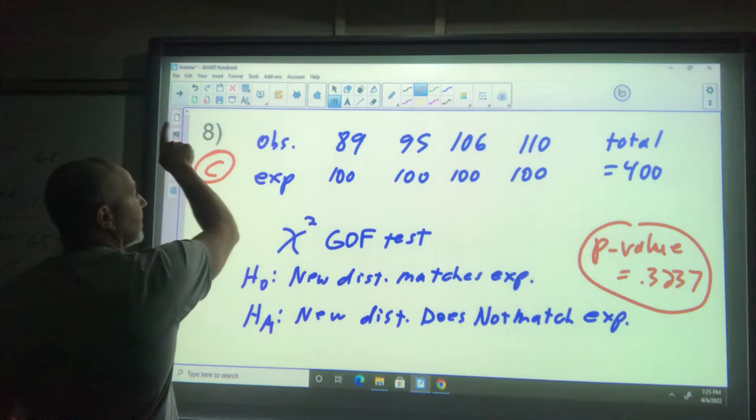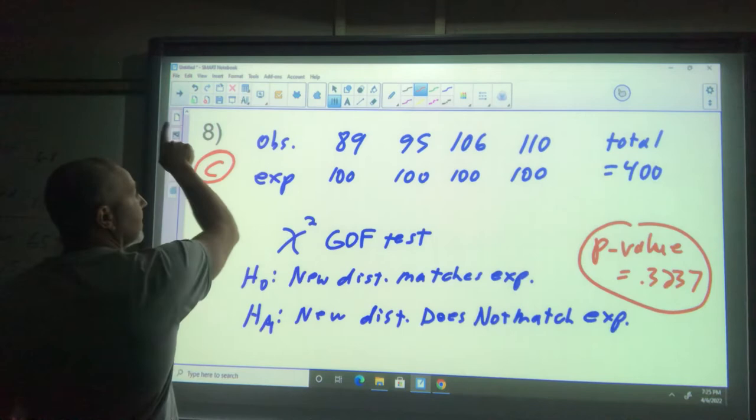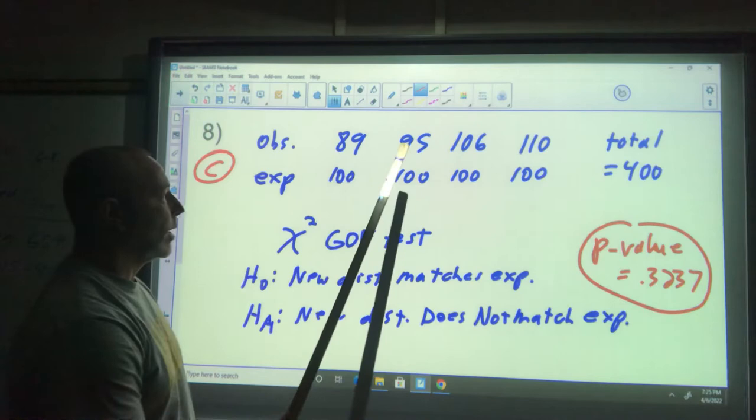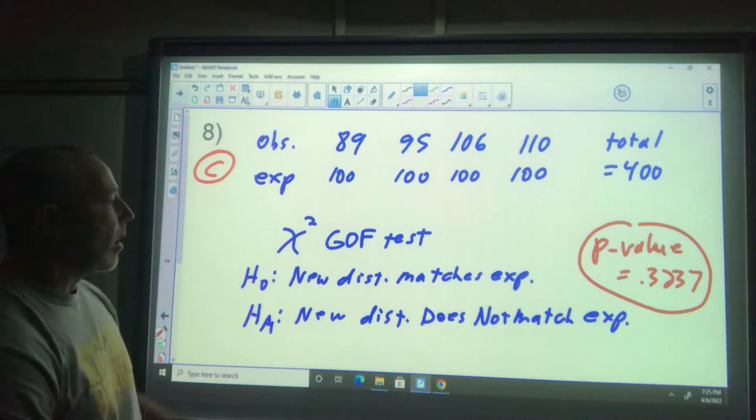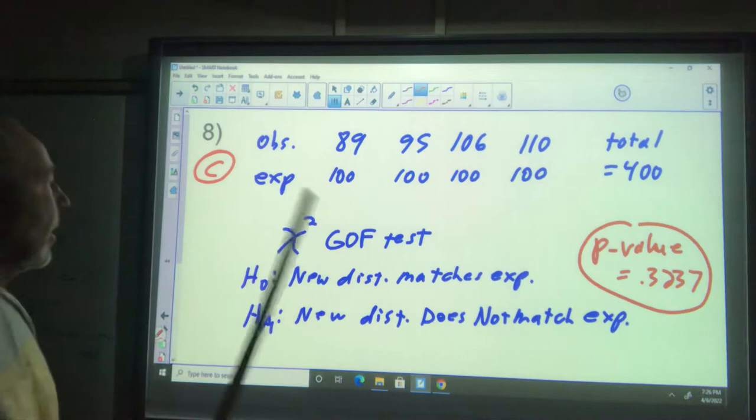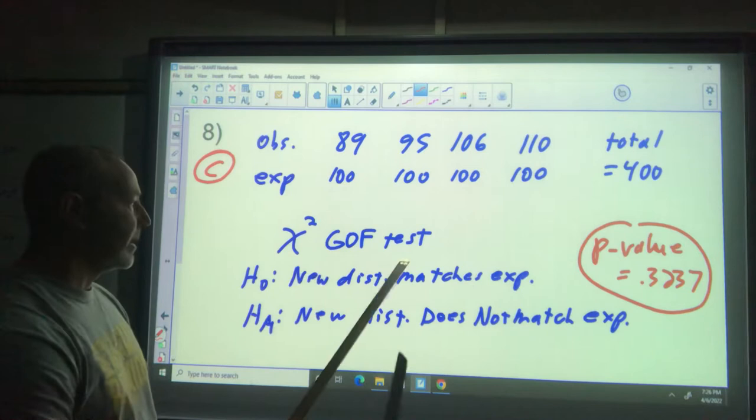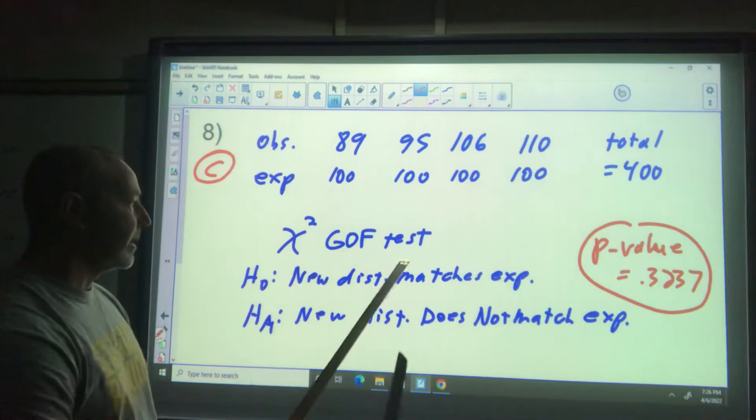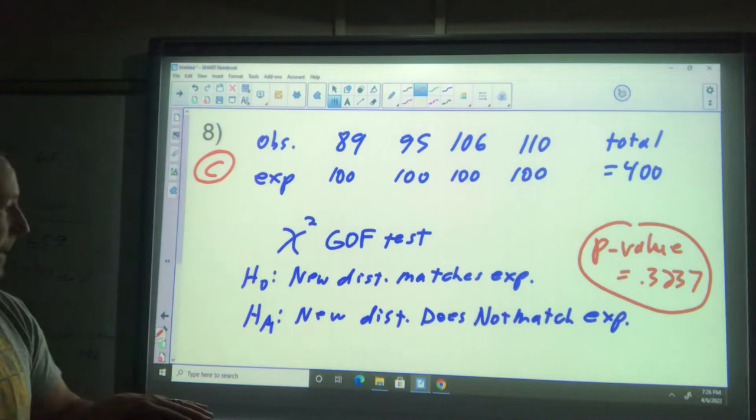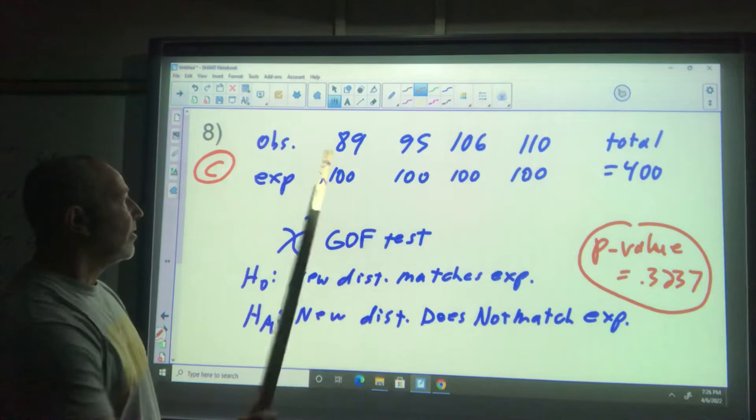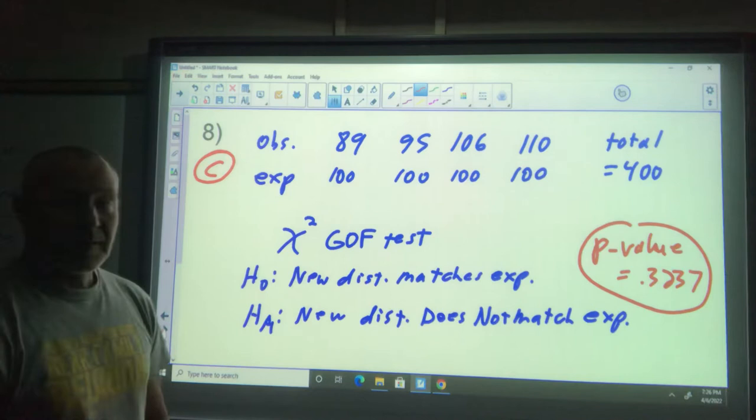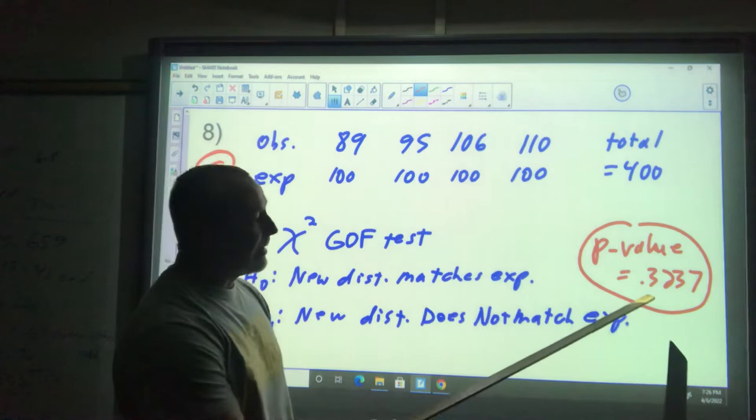Our observations are 89, 95, 106, and 110 of the different toys. We expected 100 of each toy - the total is 400. Put observed values in list one, expected values in list two, then run a chi-squared goodness of fit test. The null is that the new distribution matches what we expect. The alternative is that they do not match.